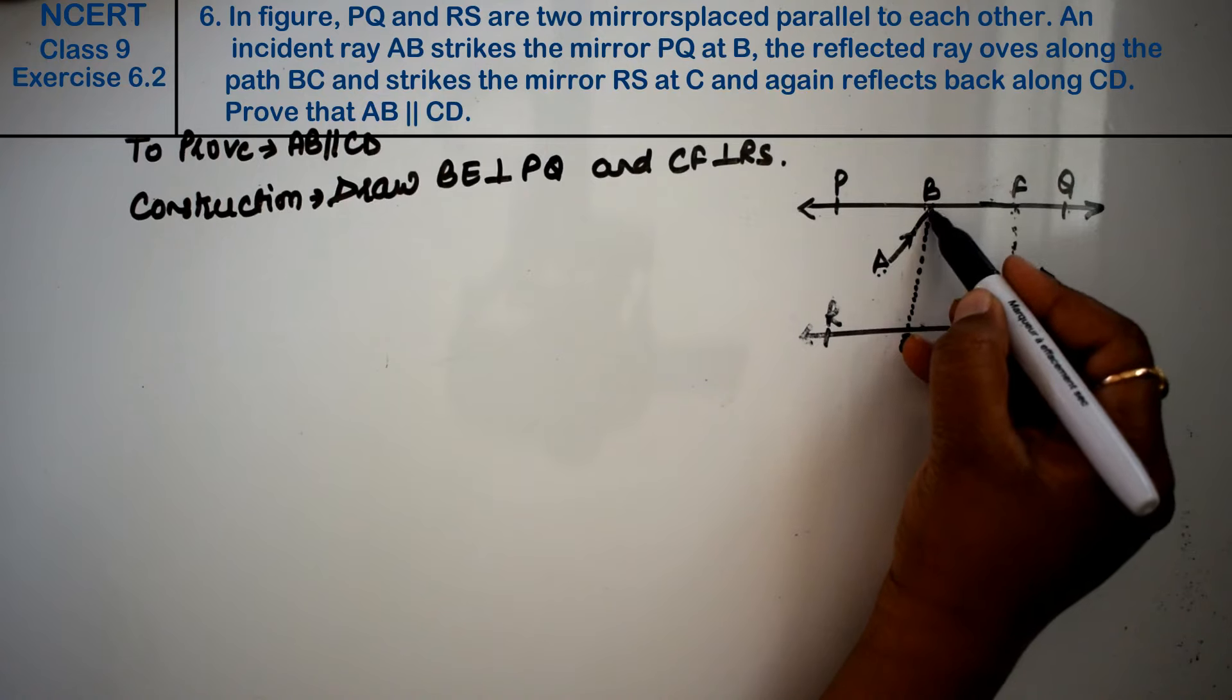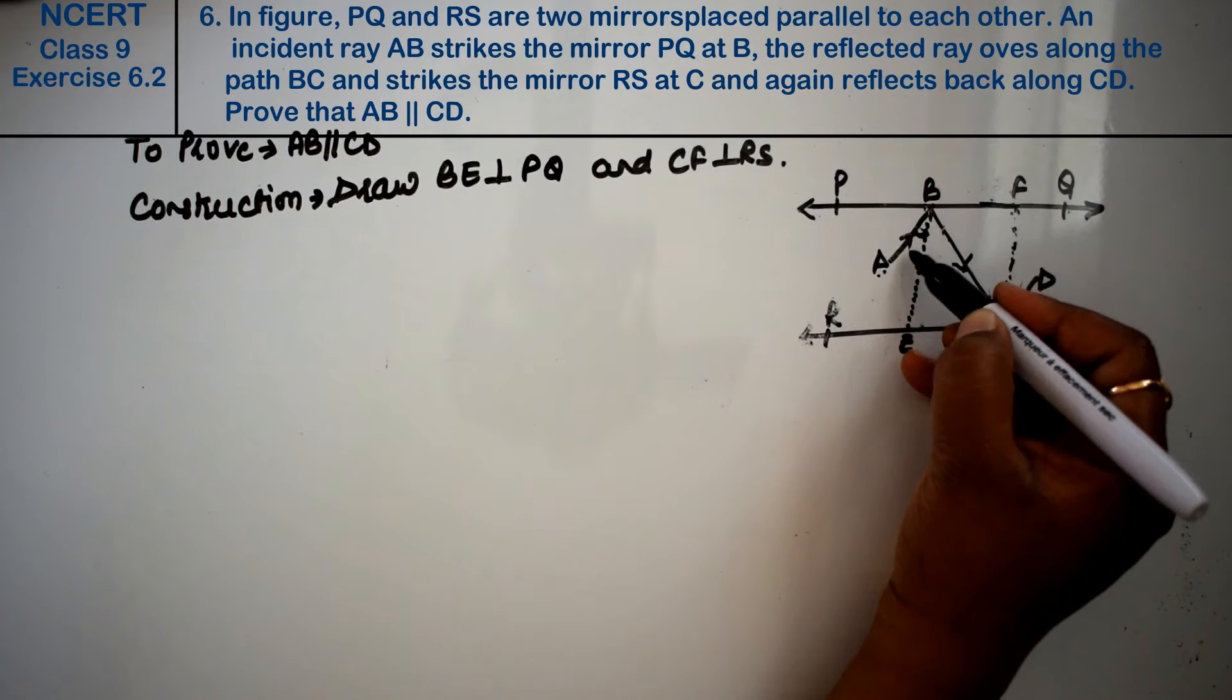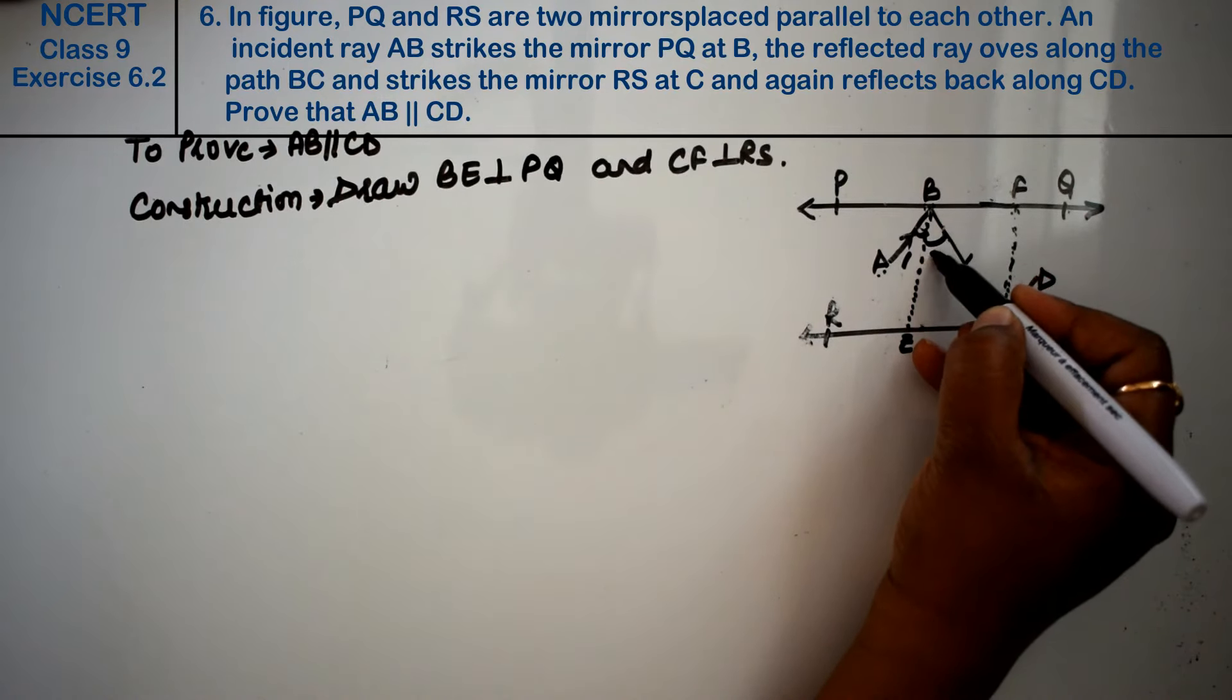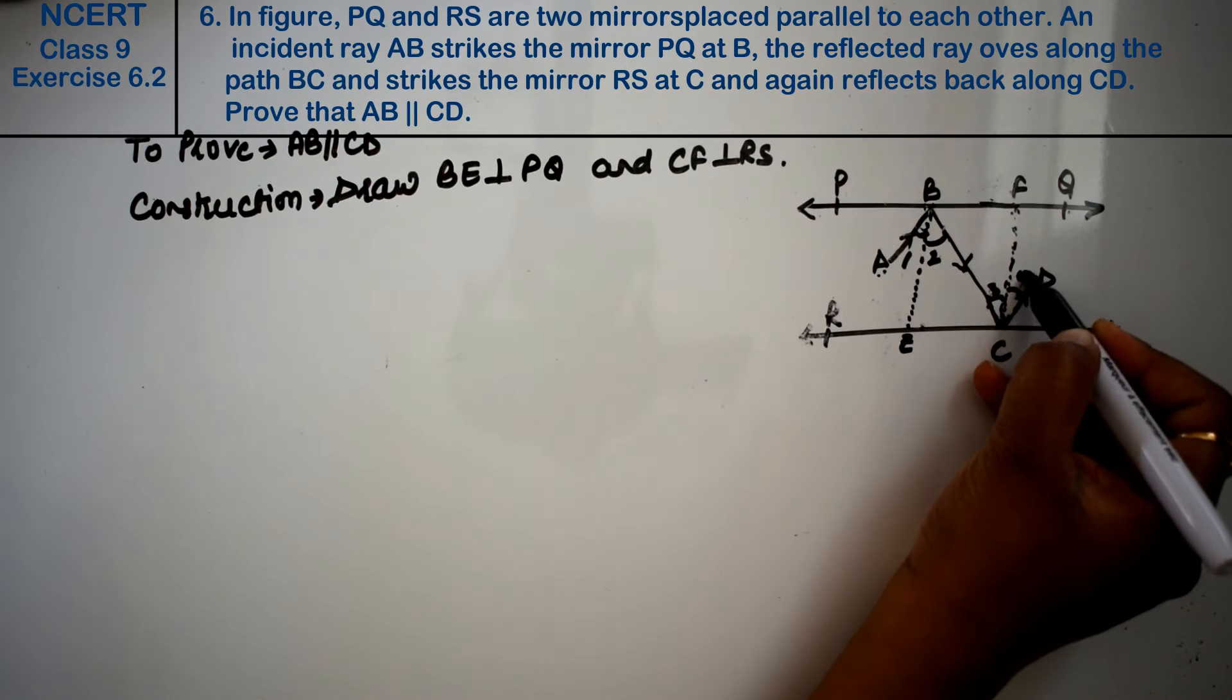Now we have to mark perpendicular lines. So what is this? Angle 1, Angle 2, Angle 3, Angle 4.